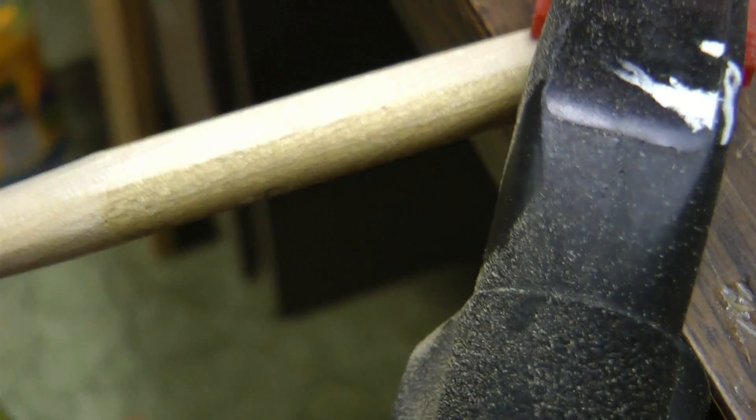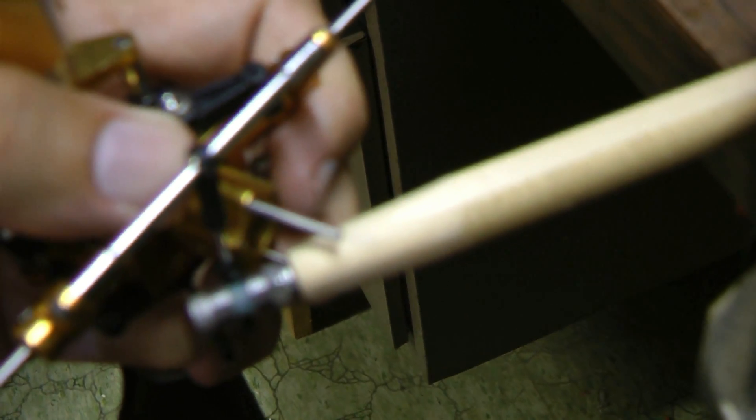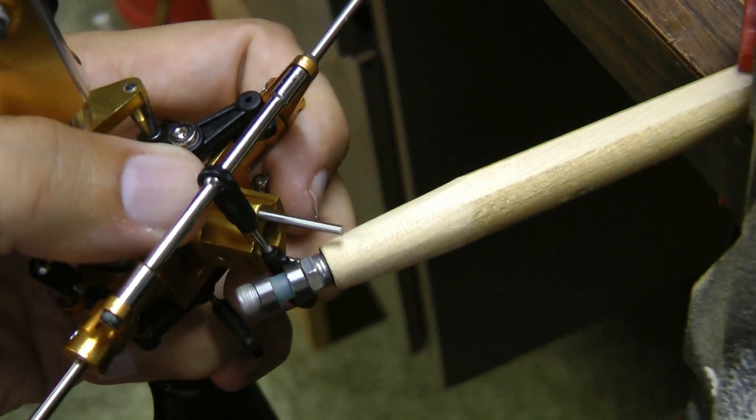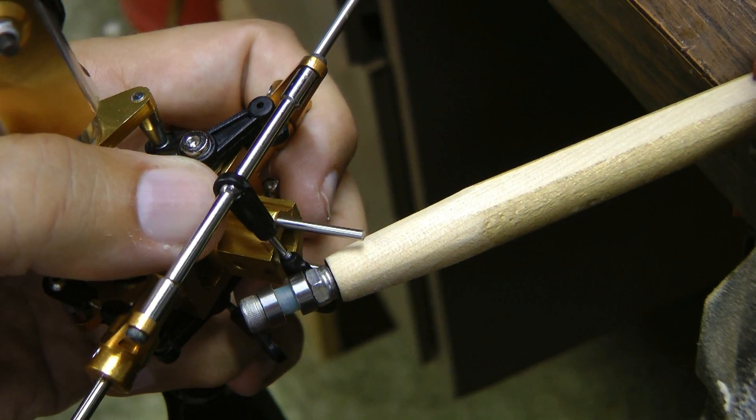You'll also have to turn the dowel down here a bit because otherwise the pins coming out of the main rotor head will not clear. So just put it on a belt sander and turn the dowel down.